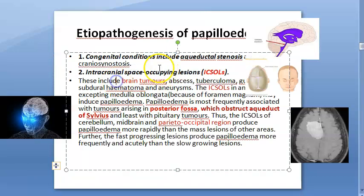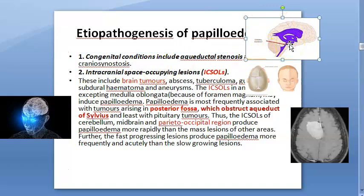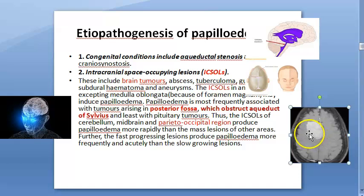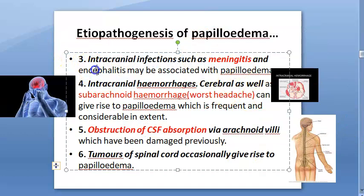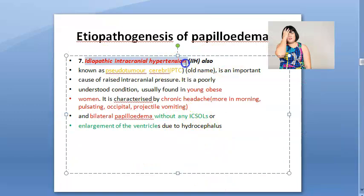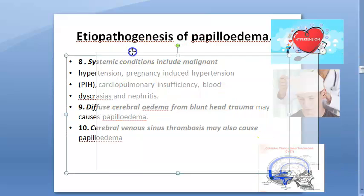Raised intracranial pressure can result from congenital stenosis of the aqueduct or craniosynostosis. Intracranial space-occupying lesions, especially posterior fossa tumors, obstruct the aqueduct of Sylvius leading to papilledema. Meningitis, encephalitis, and intracranial hemorrhage are other causes. Obstruction of CSF flow by spinal cord tumors, and idiopathic intracranial hypertension (IIH) or pseudotumor cerebri in young obese women - presenting with occipital headache and bilateral papilledema - are also recognized causes.